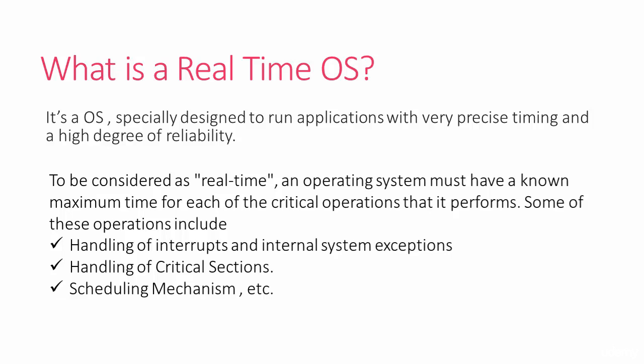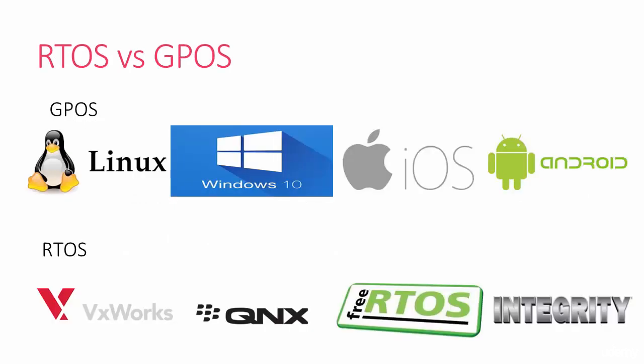We will explore more about interrupt latency later. Another critical operation is handling of critical section code. In a real-time operating system, you don't find huge critical section code segments where the interrupts of the system are turned off. And regarding scheduling, unlike general-purpose OS, the scheduling mechanism in RTOS is simple and always favors the high priority tasks. We will discuss more about all these points later in this course. Now let's see the important differences between a real-time operating system and a general-purpose operating system.